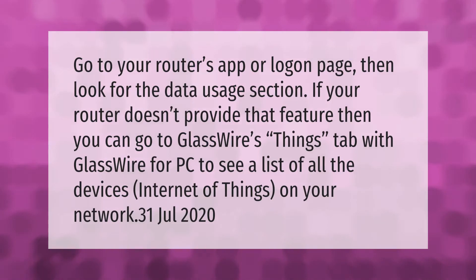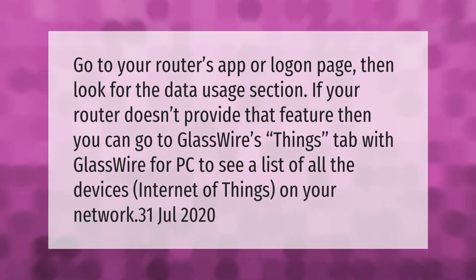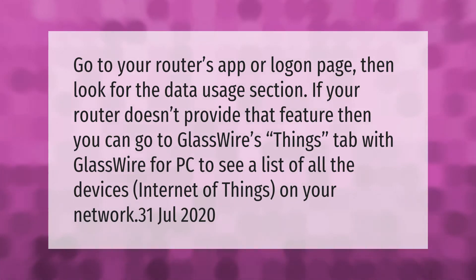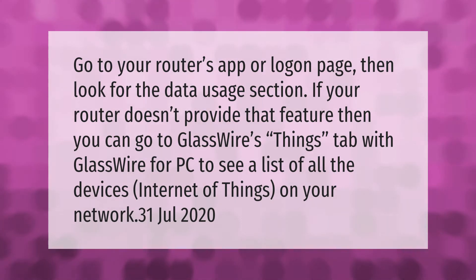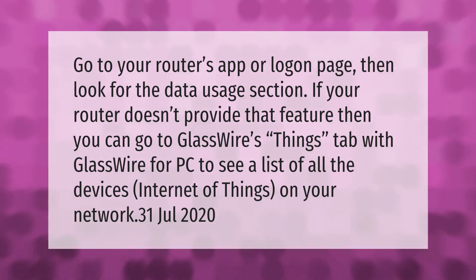Go to your router's app or log-on page, then look for the Data Usage section. If your router doesn't provide that feature, you can go to GlassWire's Things tab with GlassWire for PC to see a list of all the devices and Internet of Things on your network.